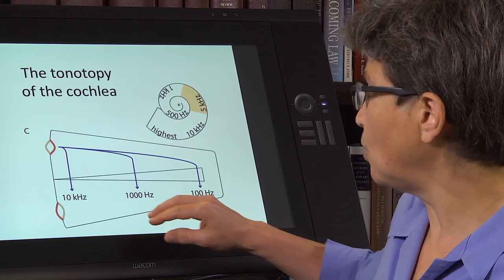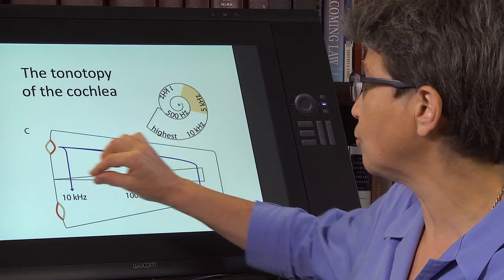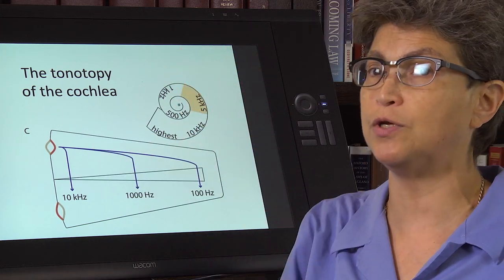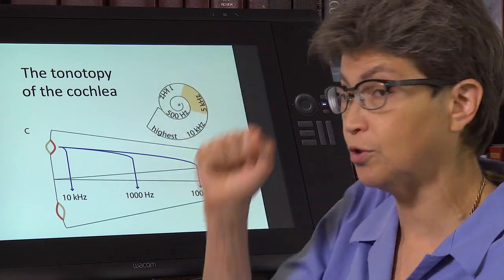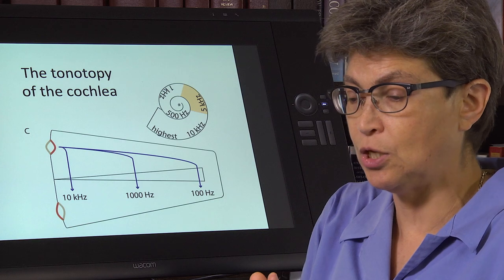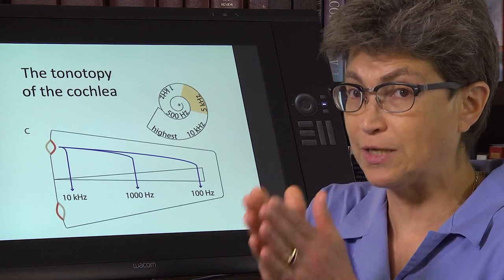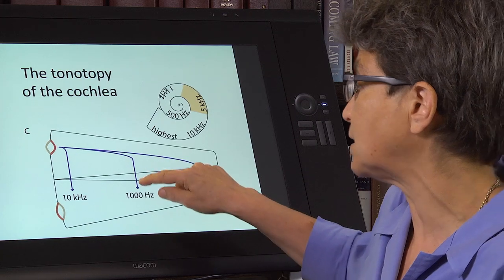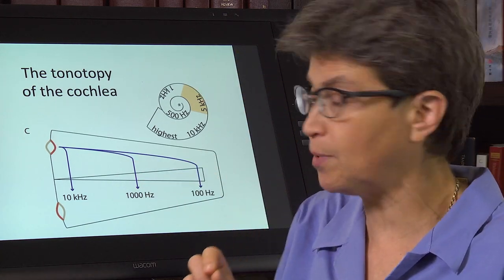So what we now understand is that there is a cochlear amplifier that not only increases the deflection of the membranes of the cochlear duct, but also augments the resolution that you can detect between two different frequencies. So let me explain what I mean by that.